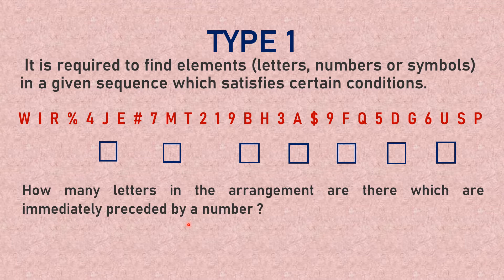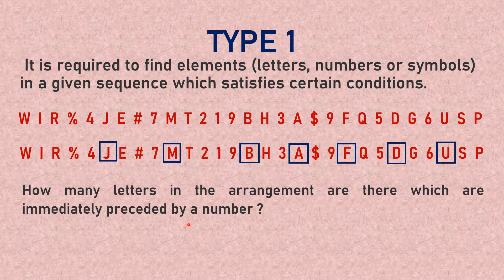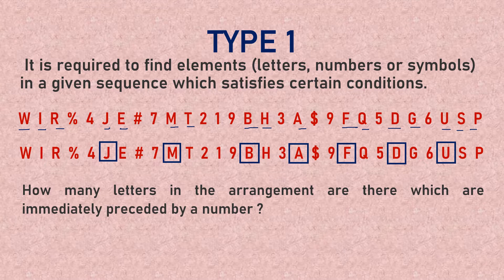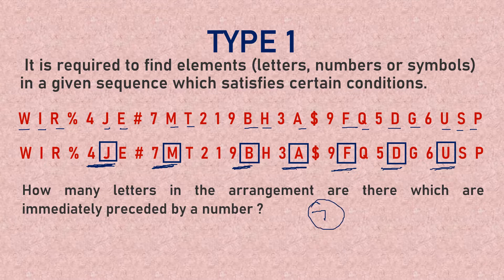To solve this, first mark all the letters in the series. From all the letters, find those preceded by a number: J is preceded by 4, M is preceded by 7, B is preceded by 9, A is preceded by 3, F is preceded by 9, D is preceded by 5, and U is preceded by 6. So there are 7 letters in this sequence which are preceded by a number.